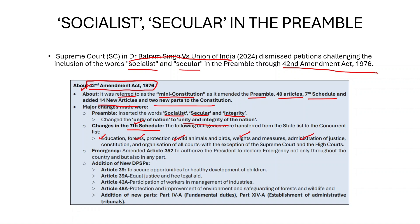Since it was implemented during the emergency period, the 42nd Amendment also amended Article 352 of the Indian Constitution, authorizing the President to declare emergency not only throughout India but also in any part of India. It also added new Directive Principles of State Policy, such as Article 39 — to secure opportunity for healthy development of children — Article 39A for equal justice and free legal aid, and Article 43A for participation of workers in management of industries.